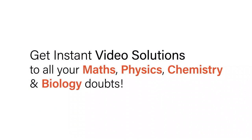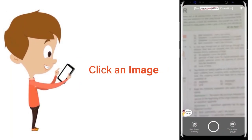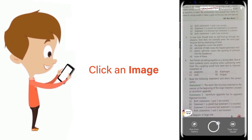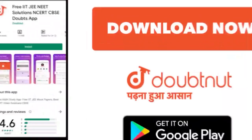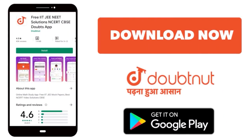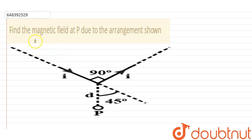With Doubtnut, get instant video solutions to all your maths, physics, chemistry, and biology doubts — just click the image of the question, crop it, and get an instant video solution. Download the Doubtnut app today. Hello everyone. The question is: find the magnetic field at the point P due to the arrangement shown.